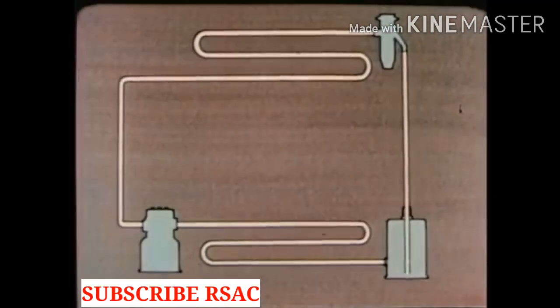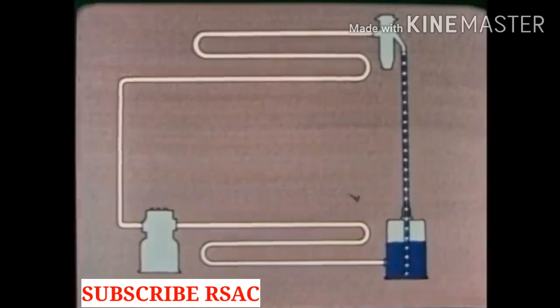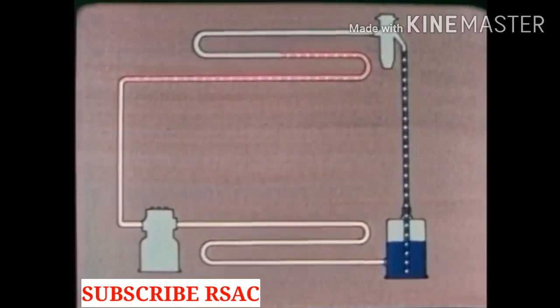Now let's review the whole thing. Refrigerant under high pressure flows from the receiver to the expansion valve. The valve causes a pressure drop. The evaporator takes in heat from the box. If anything in the box is hotter than the refrigerant it gives up its heat to the refrigerant. As the refrigerant takes in heat it changes from a liquid to a gas.